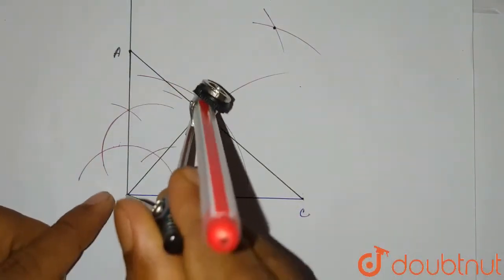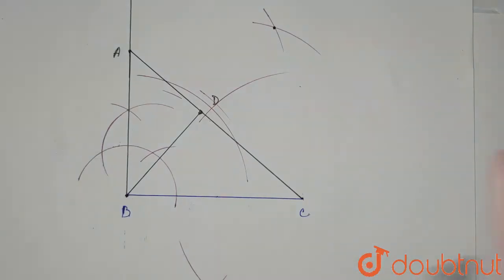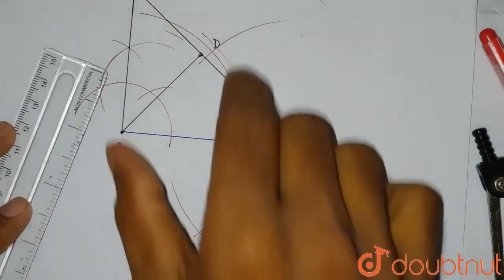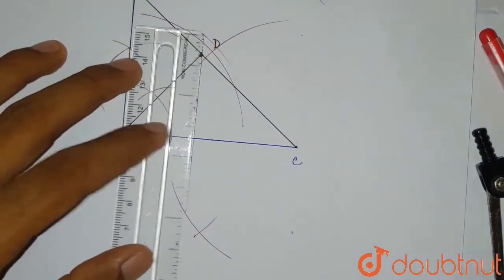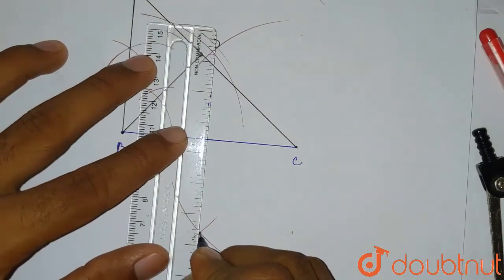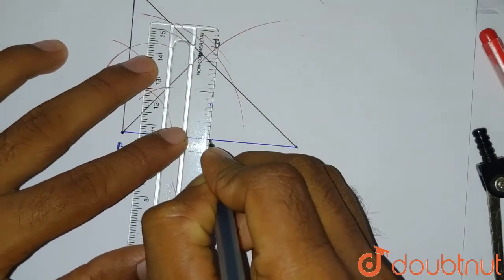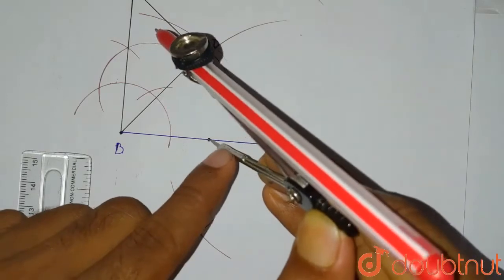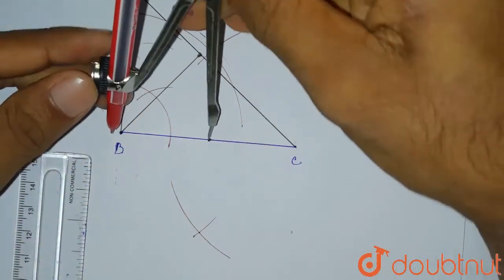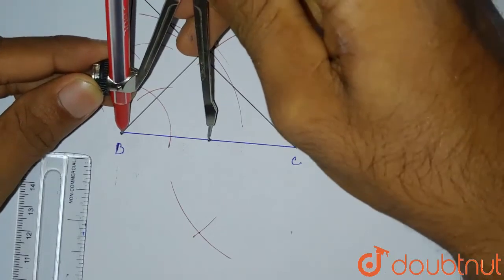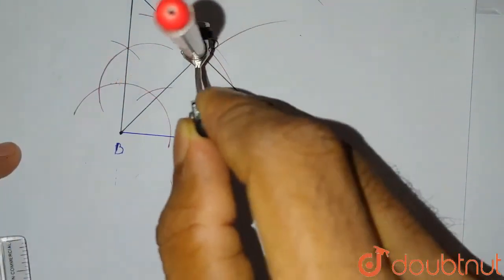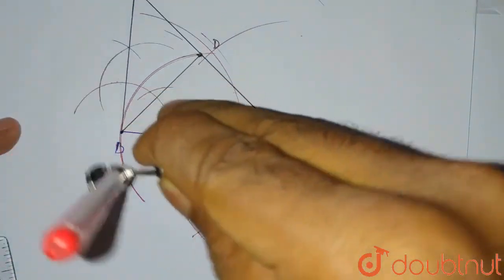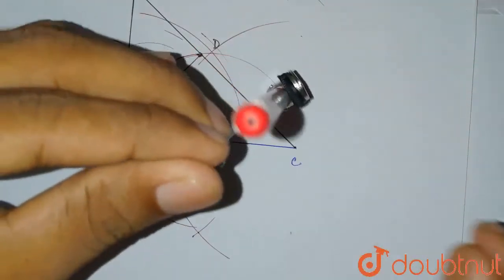We draw arcs from both ends of BC — from this point and from here — which intersect at two points. We join these two intersecting points to get the perpendicular bisector of BC. From this center point, we draw a circle with radius equal to the distance from the center to point B. This gives us our circumcircle connecting points B, C, and D.